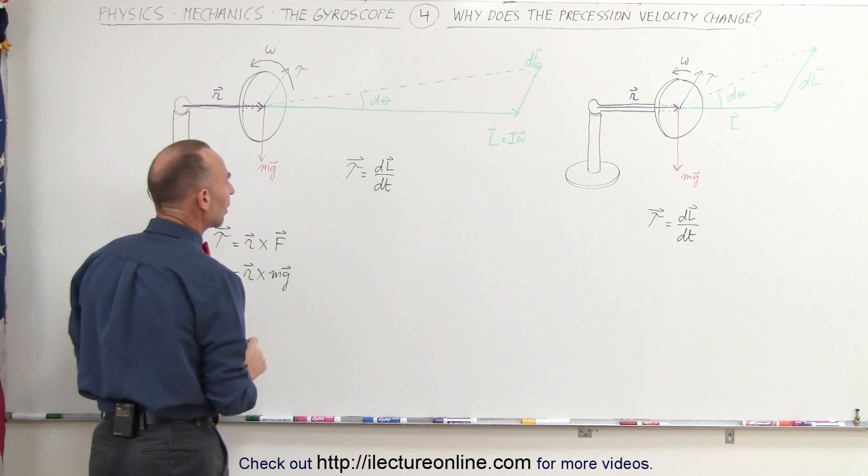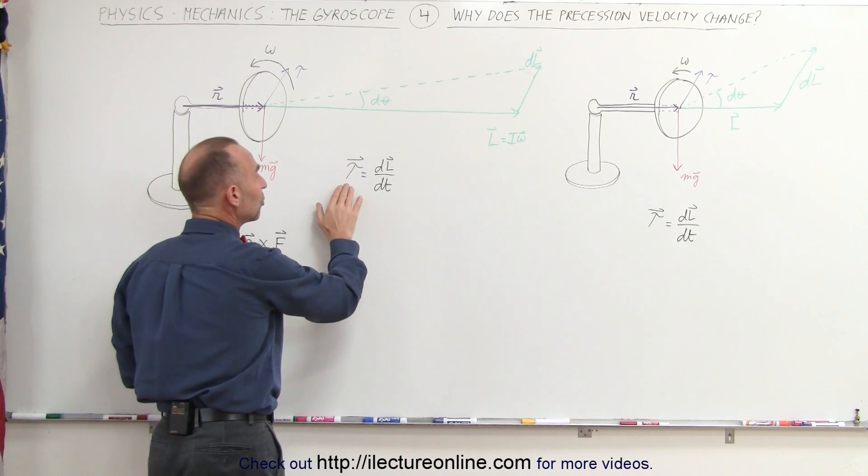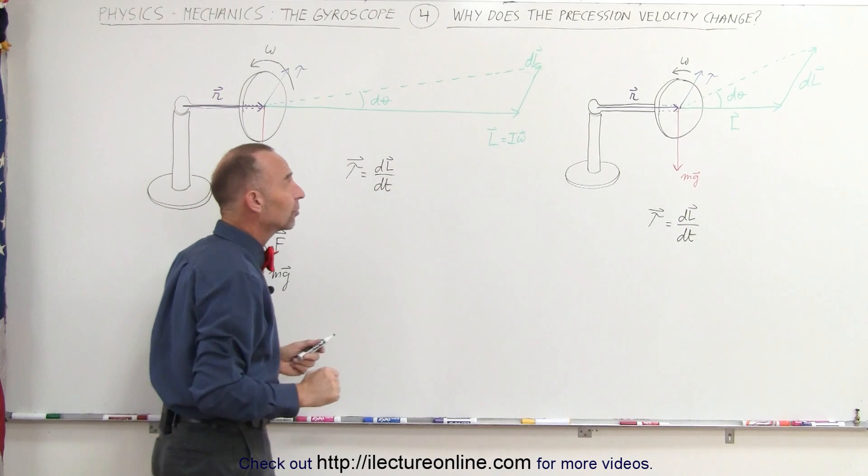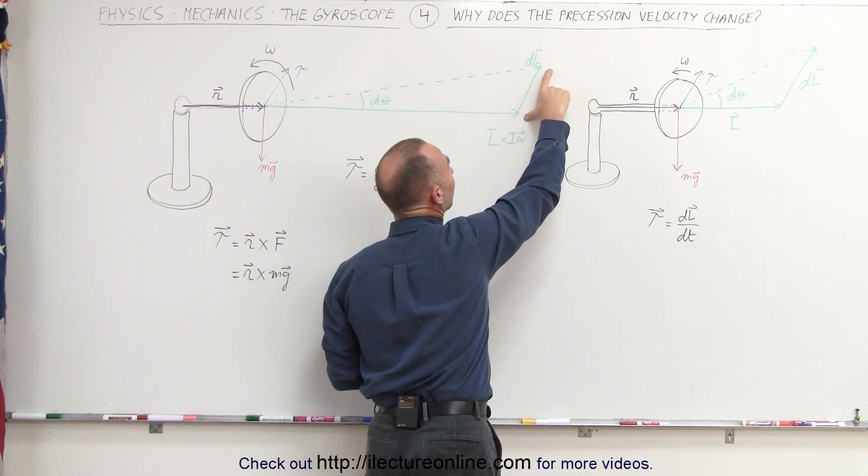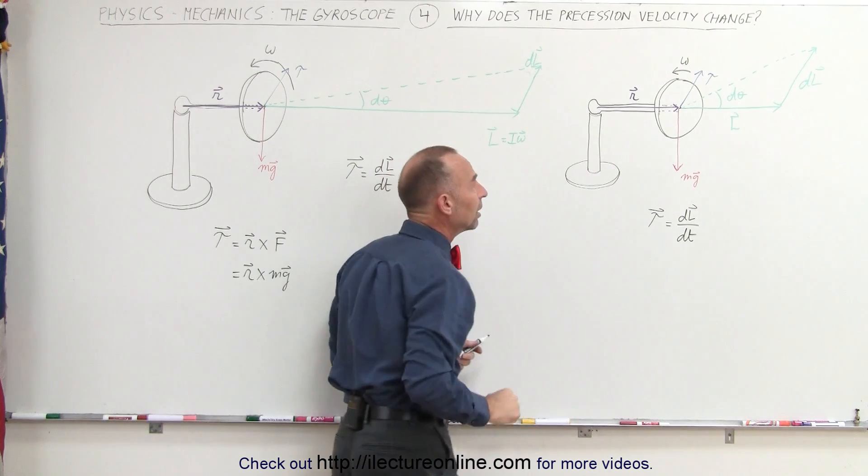since this remains constant, the torque remains constant, which causes dL/dt to remain constant, which means that the change in the angular velocity is a constant quantity.